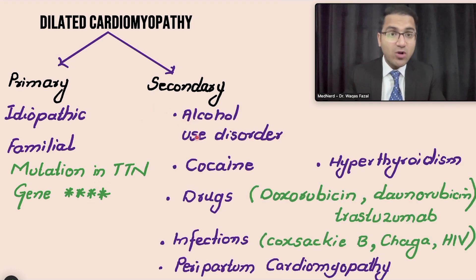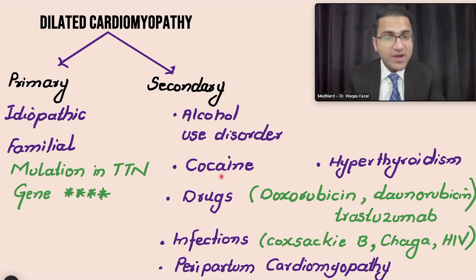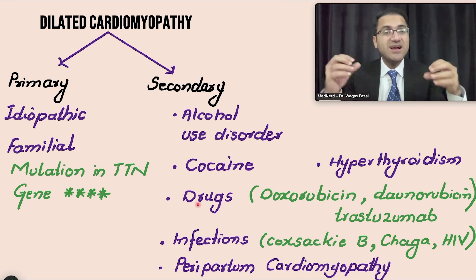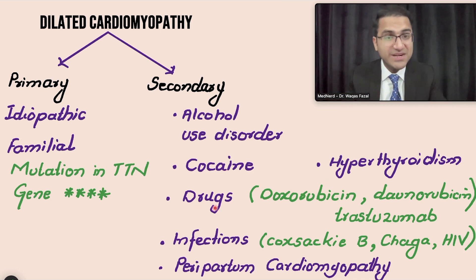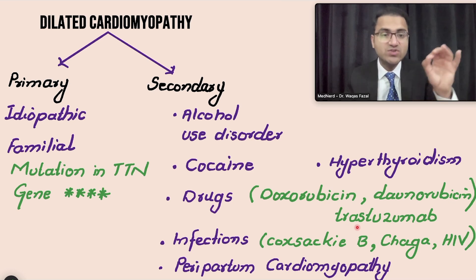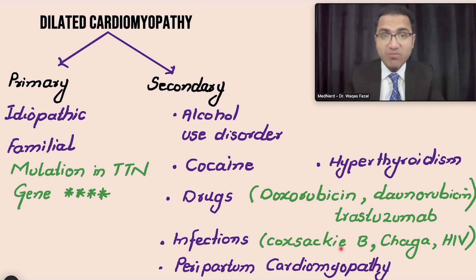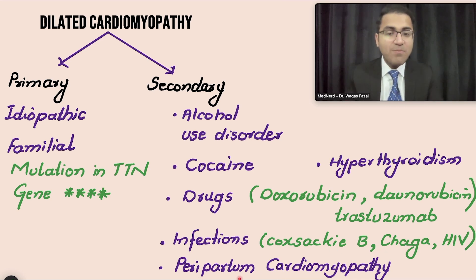Secondary causes include: alcohol use disorder, as alcohol is cardiotoxic and can cause the heart to dilate; cocaine use, which can cause cardiac dilation; hyperthyroidism, where excess tachycardia can cause the heart to fail and develop dilated cardiomyopathy; and drugs like doxorubicin and daunorubicin, which are directly cardiotoxic and cause irreversible dilated cardiomyopathy, while trastuzumab, used in breast cancer treatment, causes reversible DCM. In infections, Coxsackie B virus and Chagas disease are commonly tested causes.